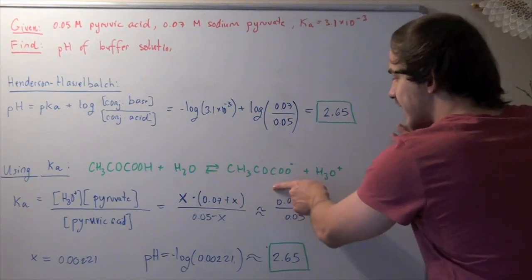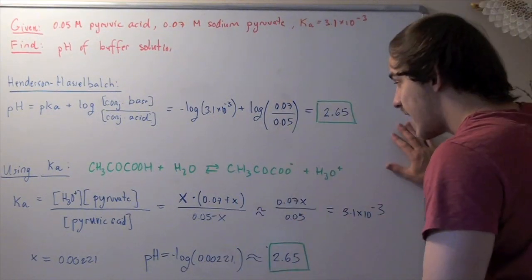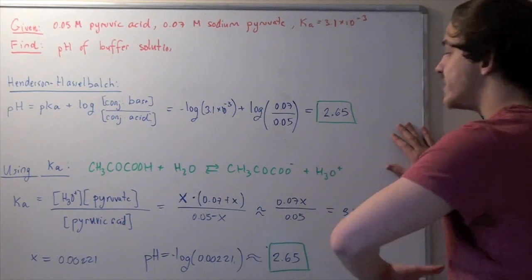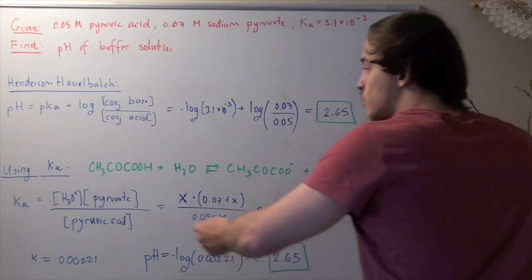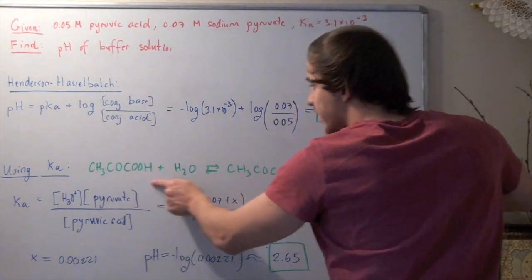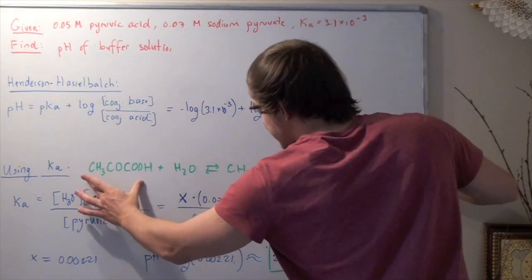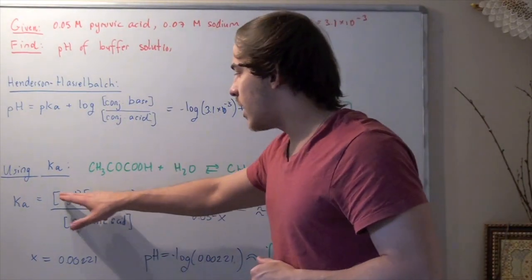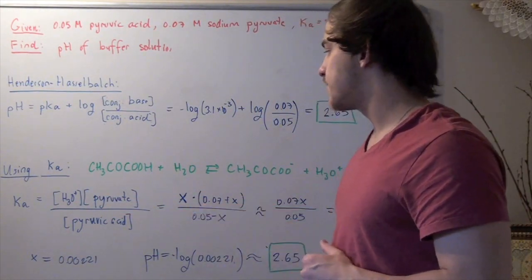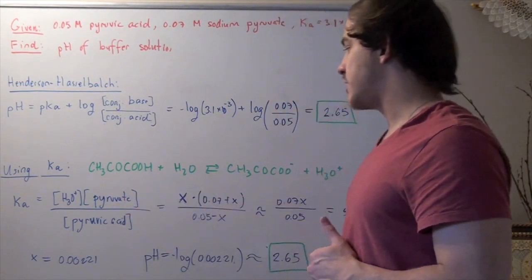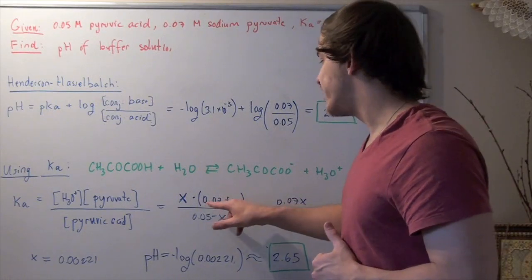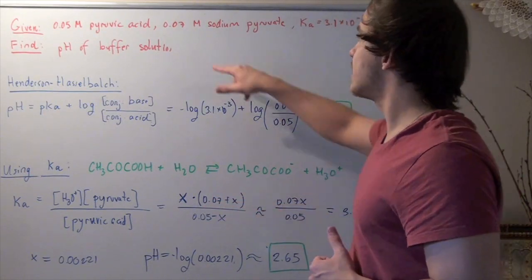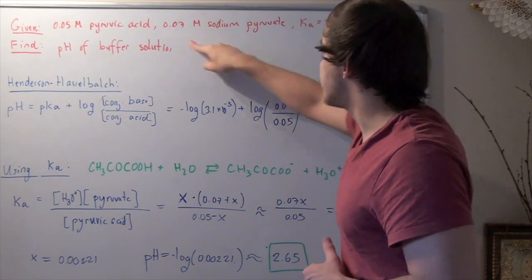The hydronium concentration increases by x. The pyruvate concentration increases by x. The pyruvic acid concentration decreases by x because it dissociates. So we represent hydronium concentration as x, pyruvate concentration as 0.07 plus x because we begin with this concentration.